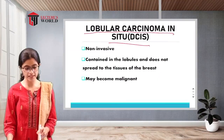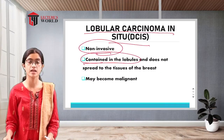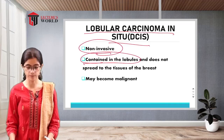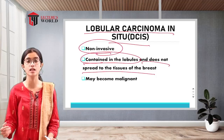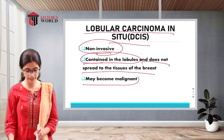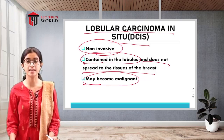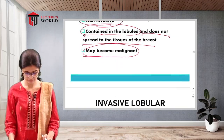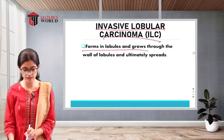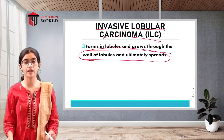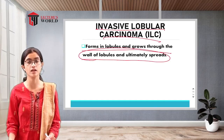Lobular carcinoma in situ (LCIS) is non-invasive and contained in the lobules. It does not spread to breast tissues but remains in its original place; however, it may become malignant if left untreated. Invasive lobular carcinoma forms in the lobules, grows through the walls of the lobules, and ultimately spreads to other parts of the body.